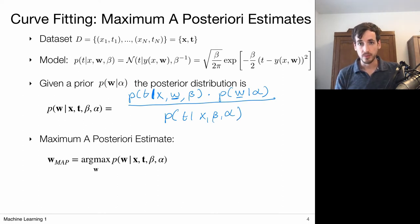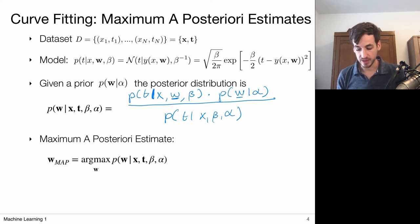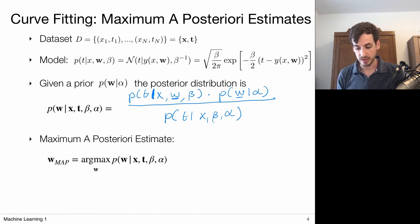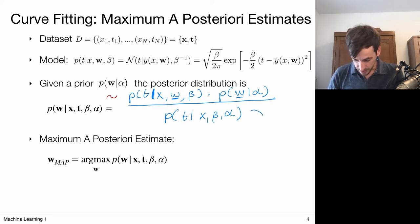Bayes theorem gives us a way to combine prior knowledge with the likelihood of the data given model parameters, normalized by the evidence. When optimizing over w, we are only interested in the numerator terms because the evidence doesn't depend on w. So we often write that the posterior is proportional to the likelihood times the prior.